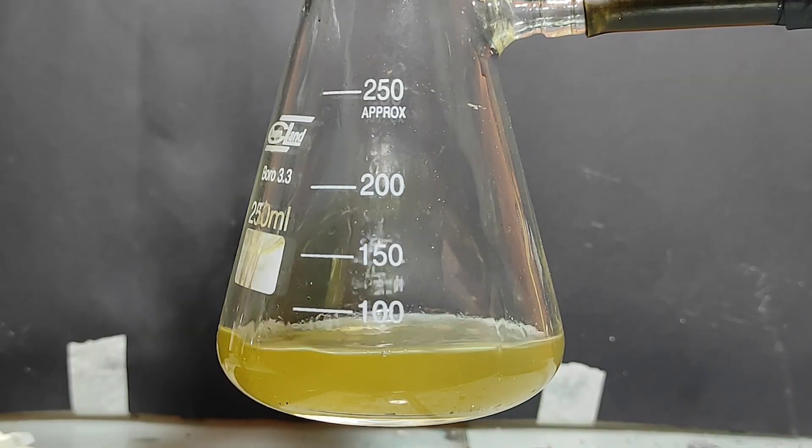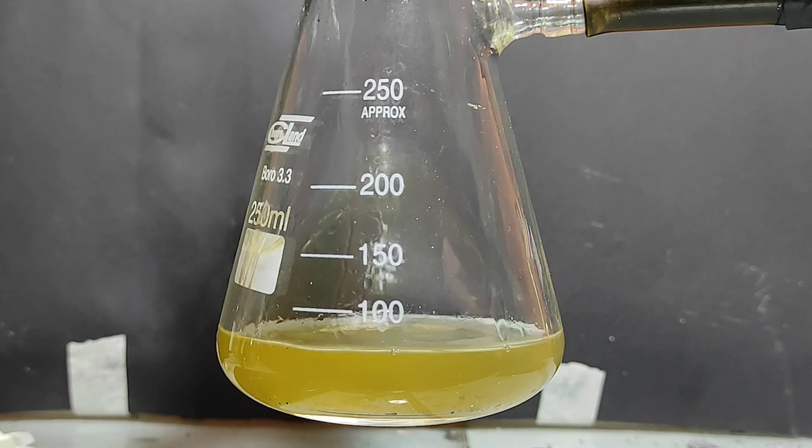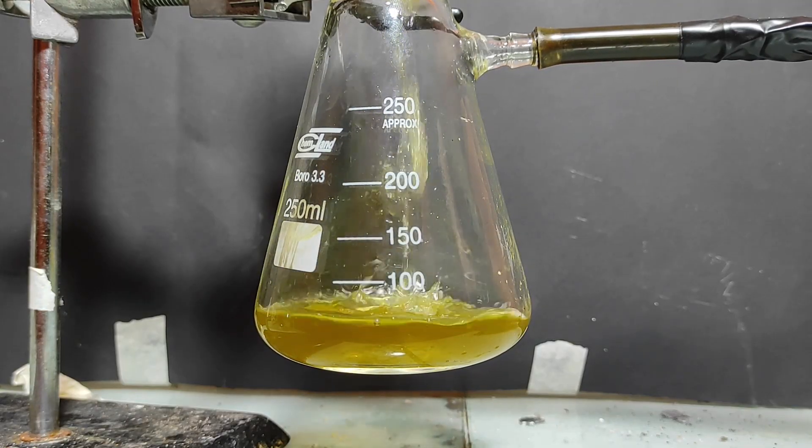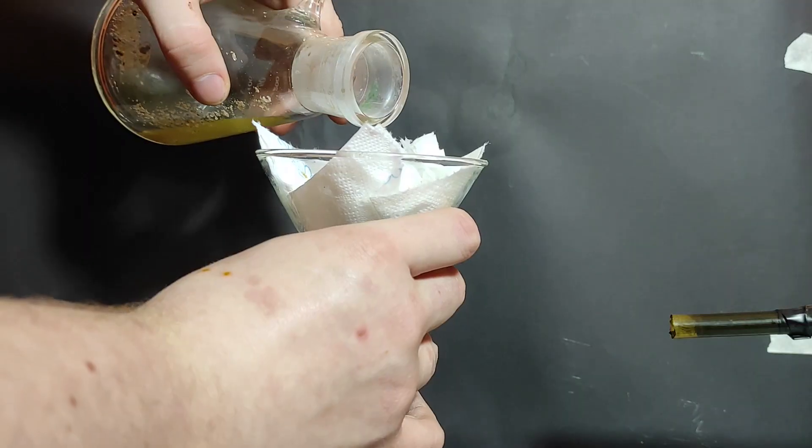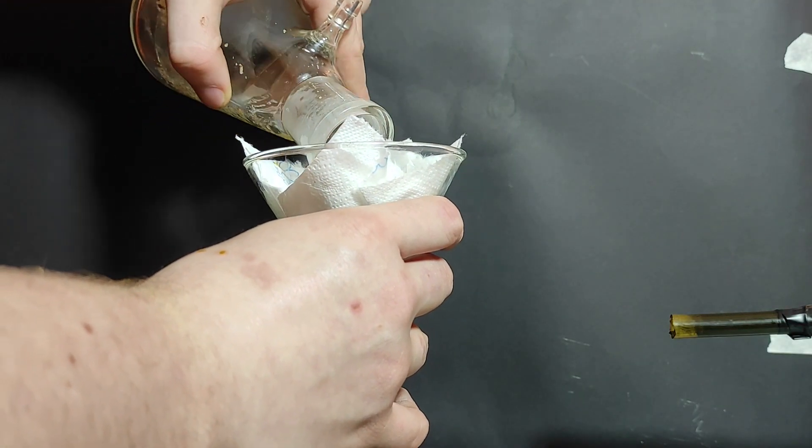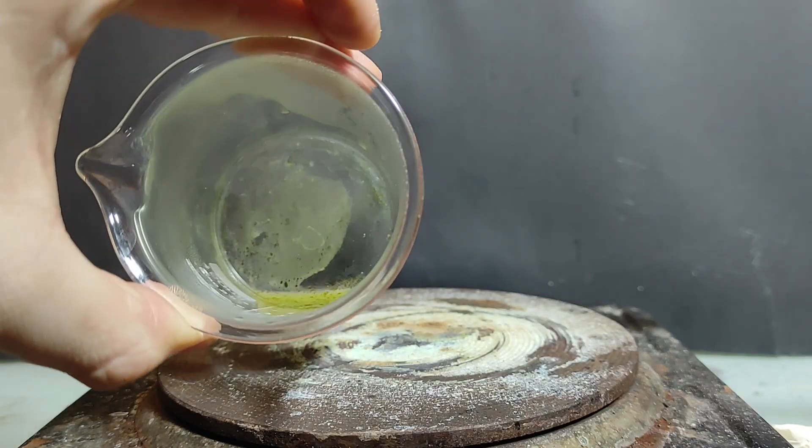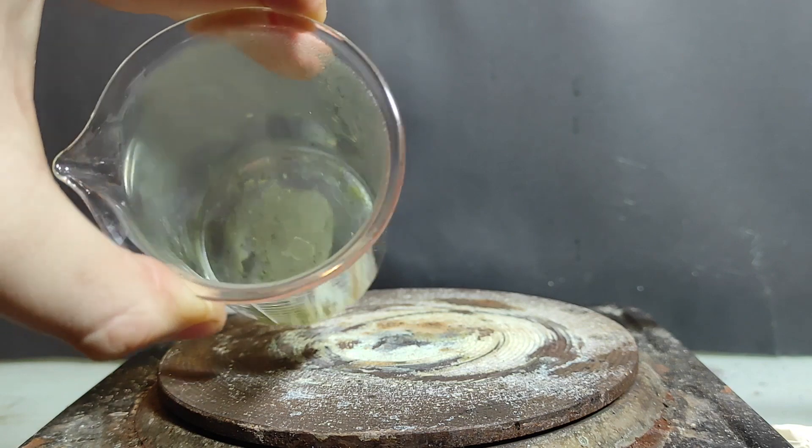CBD is actually colorless, so there's going to be some kind of an impurity. The solution was pulled through a few more times and now we're ready to evaporate the solvent. Just to remove any possible impurities it was then filtered. Anyway, it was then put on a hot plate where the solvent was evaporated. Next, it was put into a freezer for a while to make sure the CBD crystallized out.